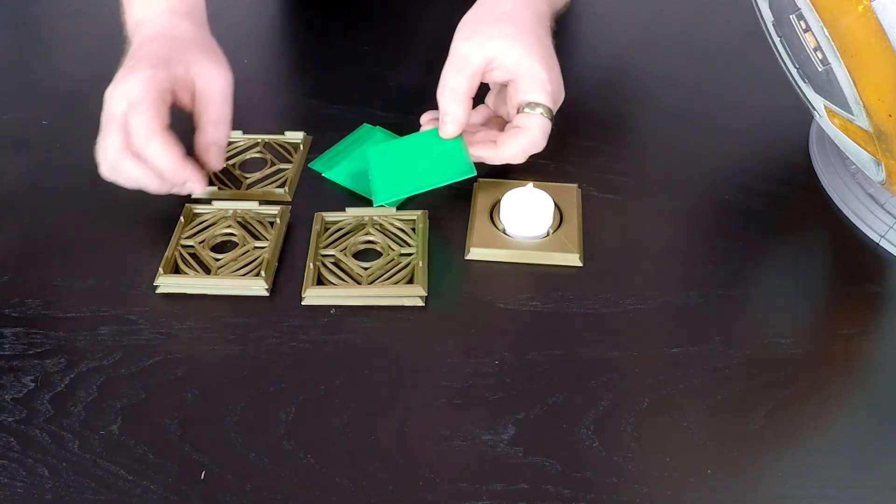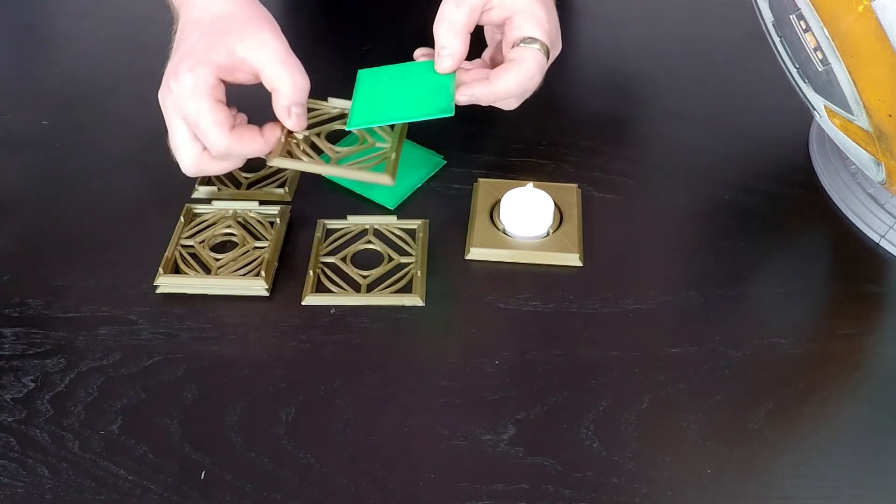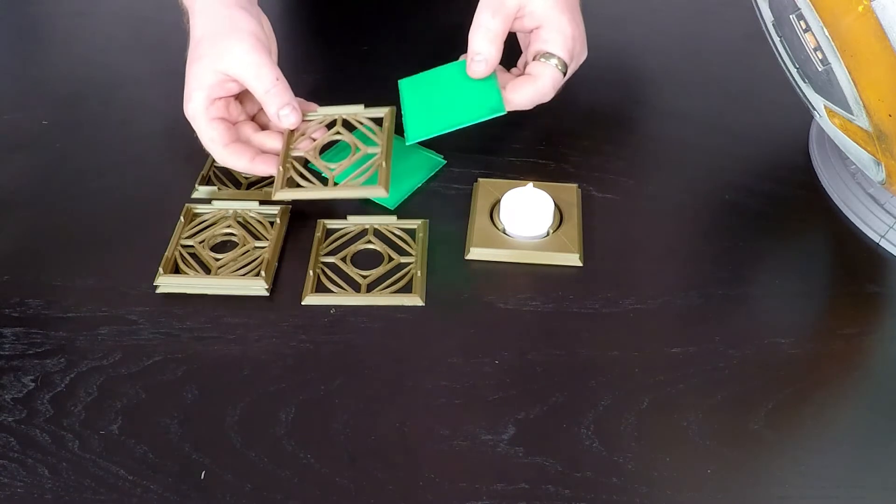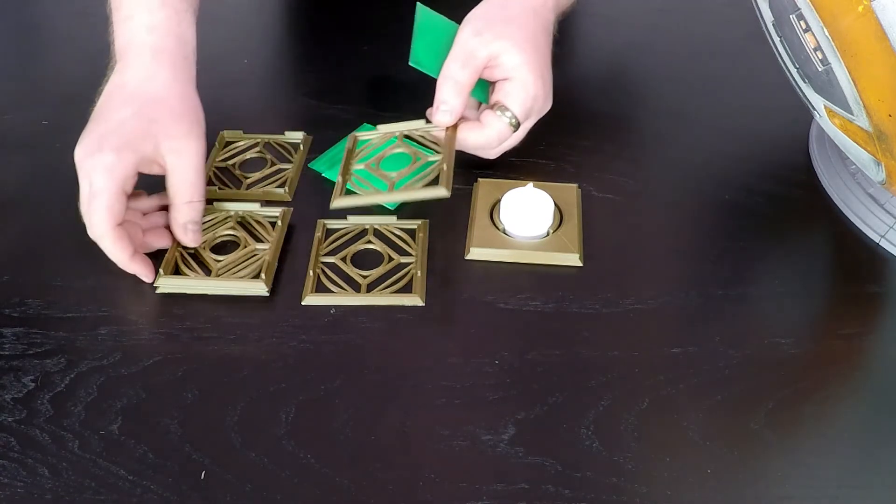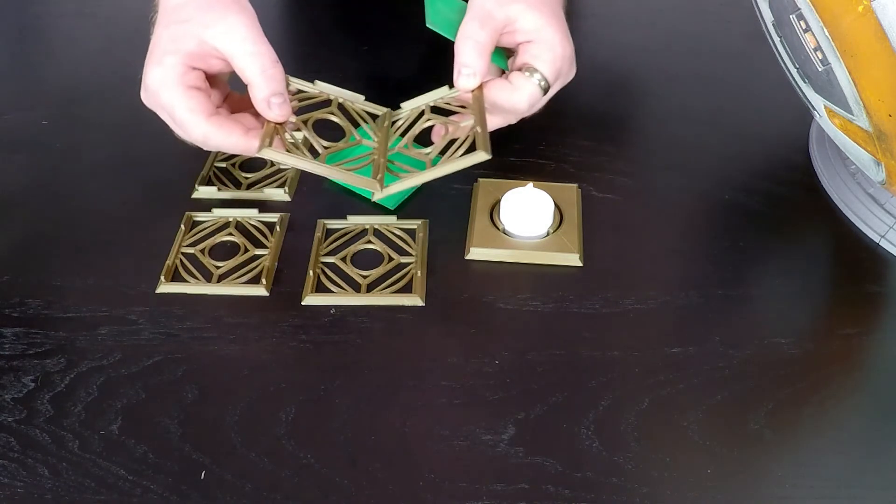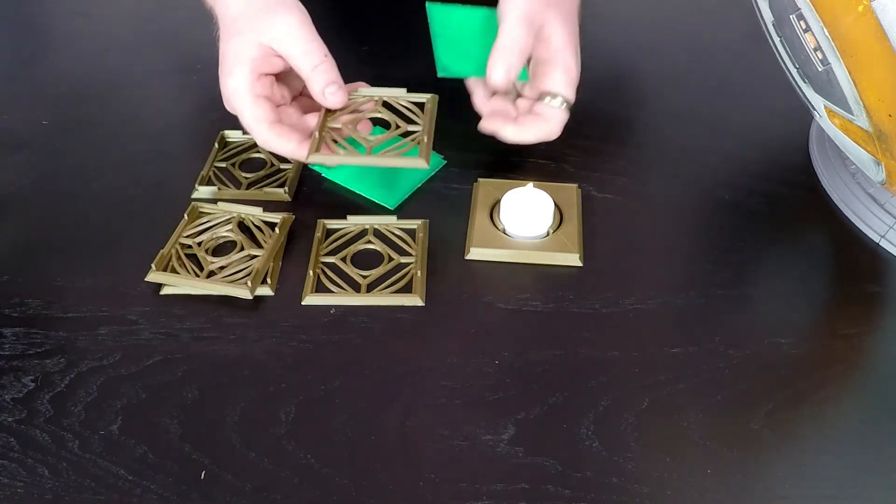Next step, we take our inserts and we put them in the side panels and the top. Now with the side panels there's two types. There's these ones with the larger teeth and these ones with the smaller teeth, and that's so that they mate up and hold together.